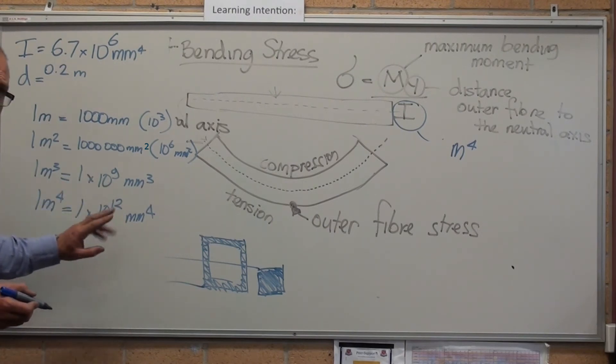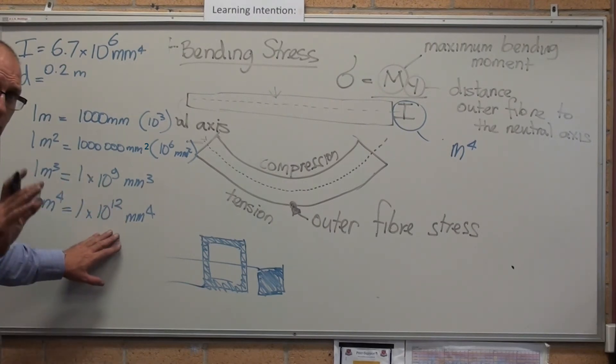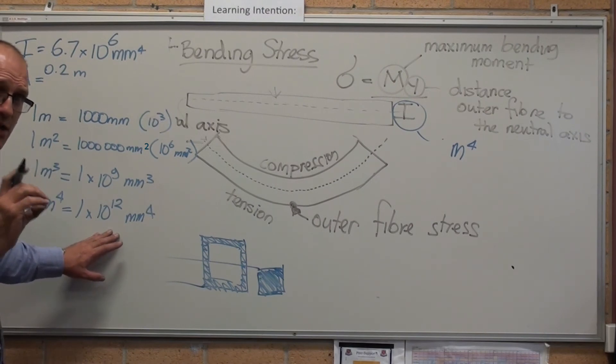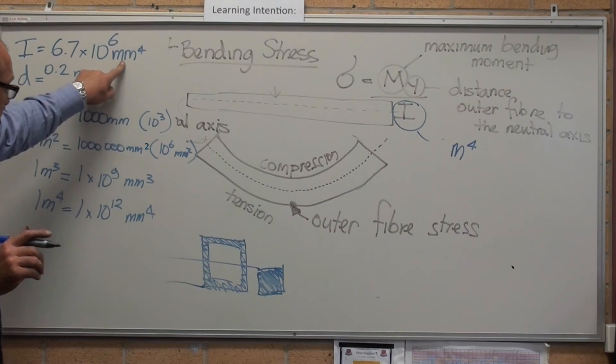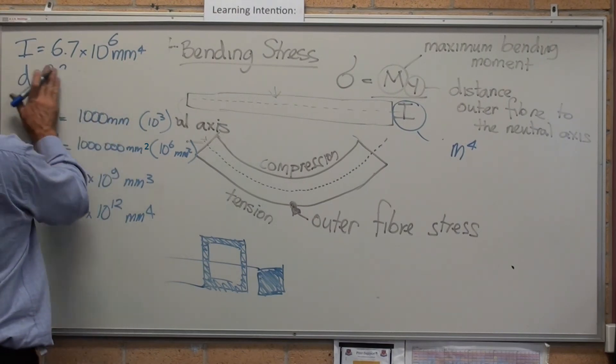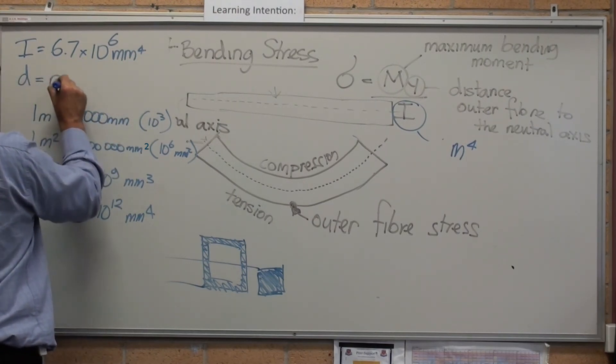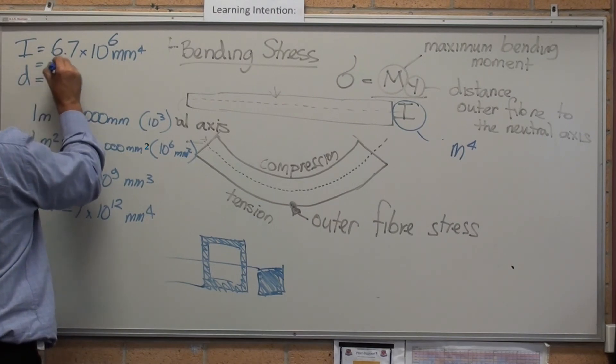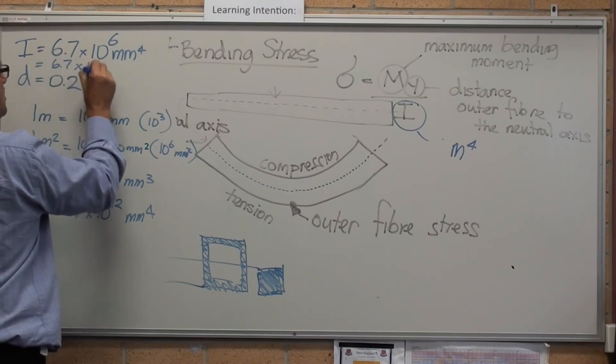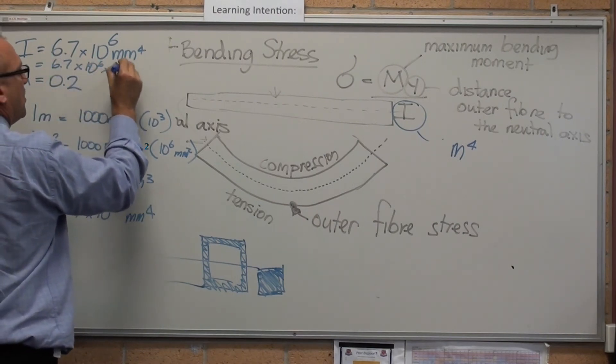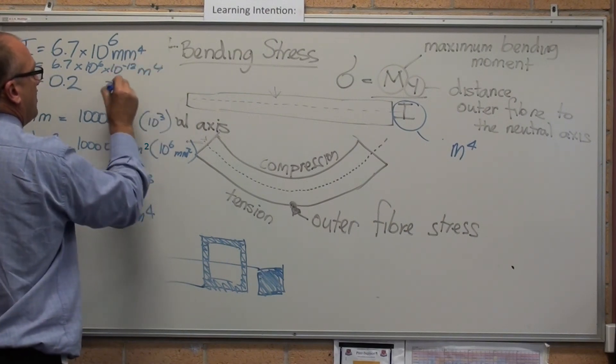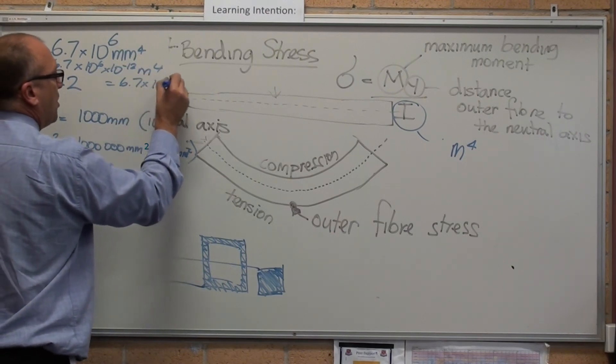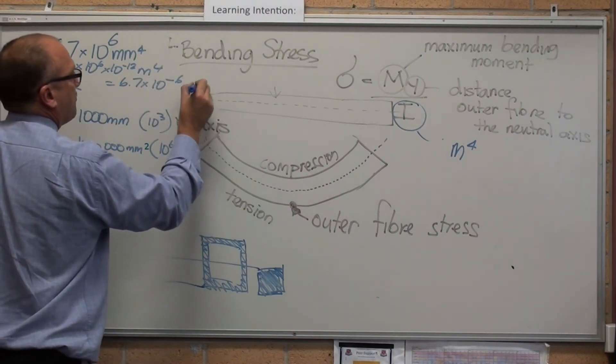If you get stuck, as you know I've always said, work in base units. Work in metres. Convert millimetres to the fourth. Distance equals 0.2 metres. 6.7 times 10 to the 6 times 10 to the minus 12 metres to the fourth equals 6.7 times 10 to the minus 6 metres to the fourth.